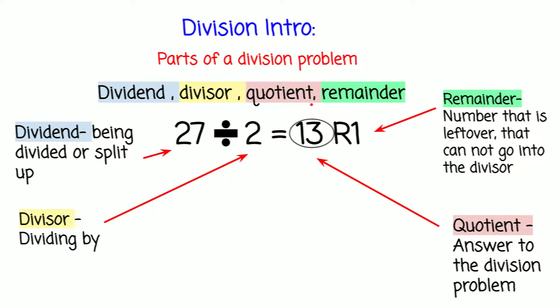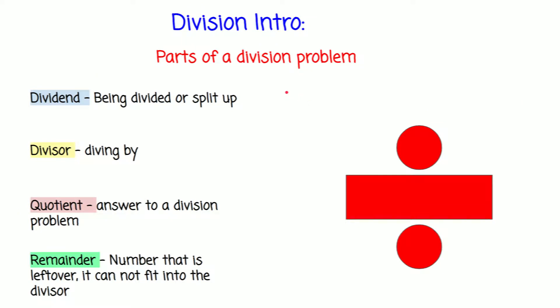Let's revise together. We're going to be revising what we just learned. I have all the vocabulary words we learned today — you can copy these down in your notebook or on your computer, wherever you like. So let's see what the dividend is again. Dividend is being split up or divided. Divisor — we're dividing the dividend by the divisor.